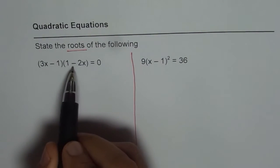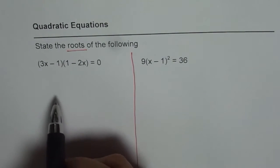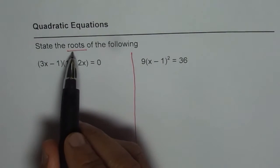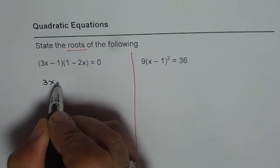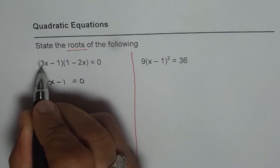Now here, if there are two factors whose product is 0, that means either one of them could be 0 or both could be 0. Since we need to find all the possible roots, we will equate them to 0 and then figure out what x could be.